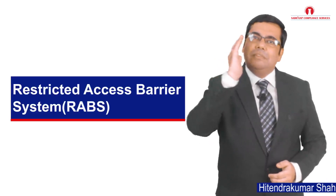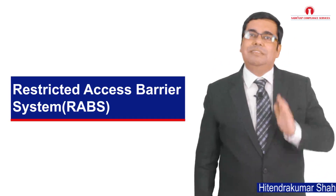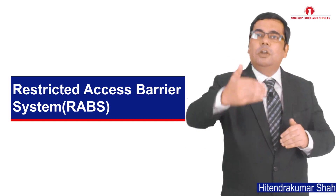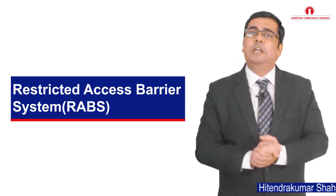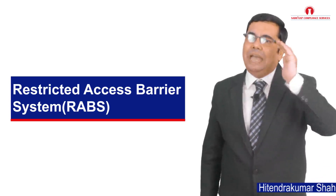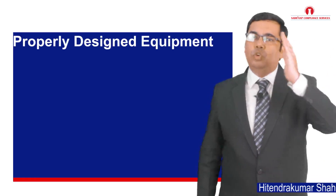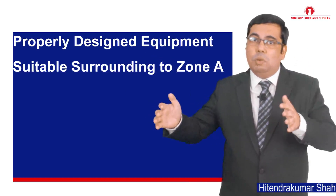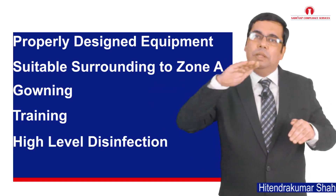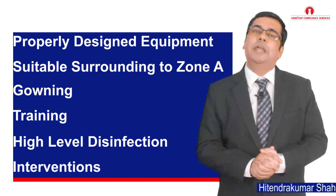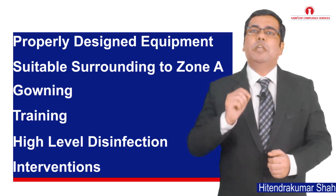Another approach that may be considered over conventional aseptic filling area is the Restricted Access Barrier System, also known as RABS. This is a system that introduces a physical barrier between the operator and the aseptic operation. Restricted access barriers and isolators may be beneficial in assuring the required conditions and minimizing direct human interventions. It is important to note that this is a full system approach, and it includes elements like properly designed equipment, suitable surrounding room design to maintain environment zone A, proper governing practice, proper training, initial and periodic high-level disinfection, and related procedures or other instructions for routine and rare interventions.